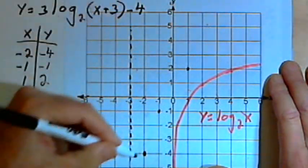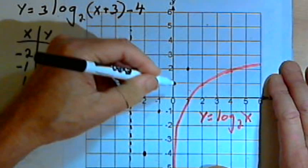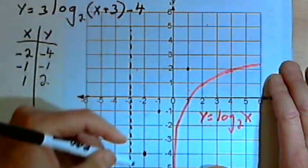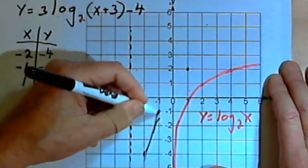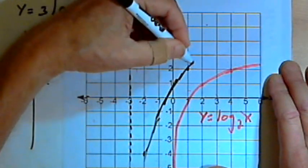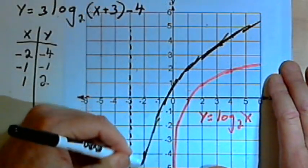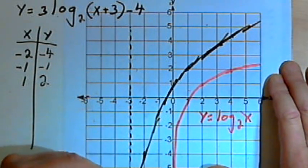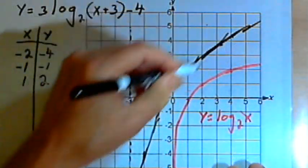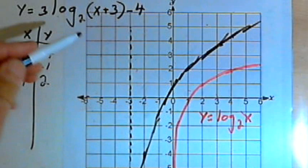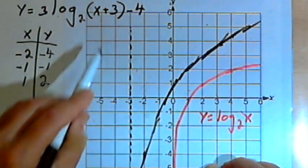Given these three points and my vertical asymptote, I can sketch the curve in pretty easily. So it's going to go up like this.